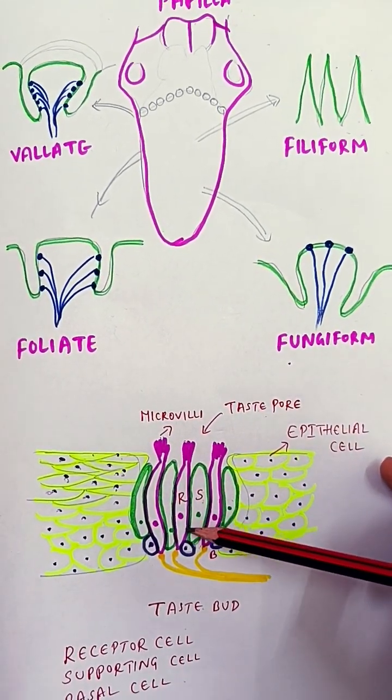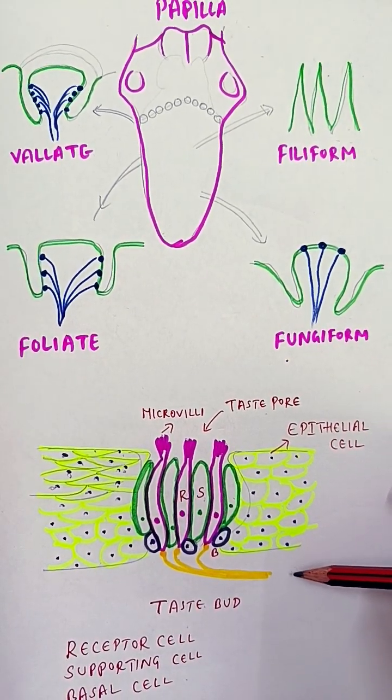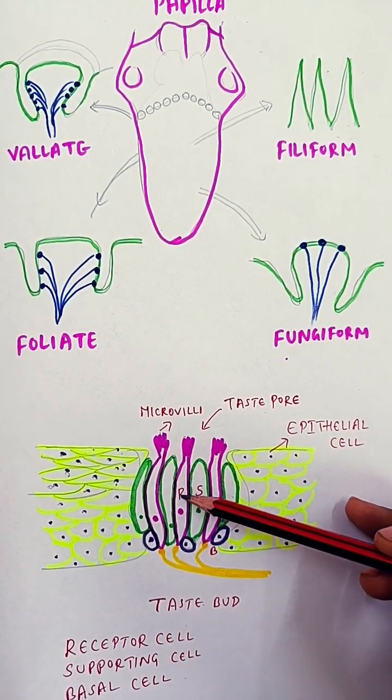At the base of the receptor cell you can see the nerve endings which will carry the information via seventh, ninth, and tenth cranial nerves. Supporting cells support the receptor cells. Basal cells give rise to both receptor cells and supporting cells.